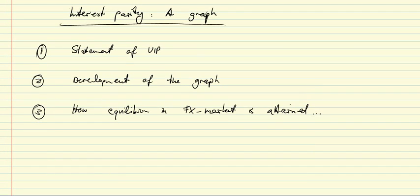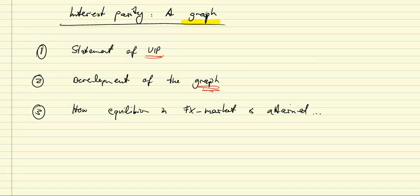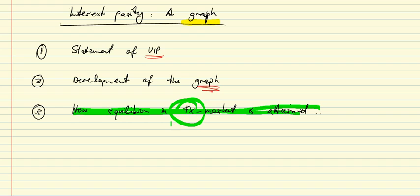For this clip we'll be discussing the concept of interest parity in a graph. We're going to develop a graph that allows us to understand and analyze issues in the foreign exchange market in more detail. We'll do that in three steps: first, develop a quick statement of UIP — the uncovered interest parity; second, develop the graph itself; and third, consider how equilibrium in the foreign exchange market is attained.